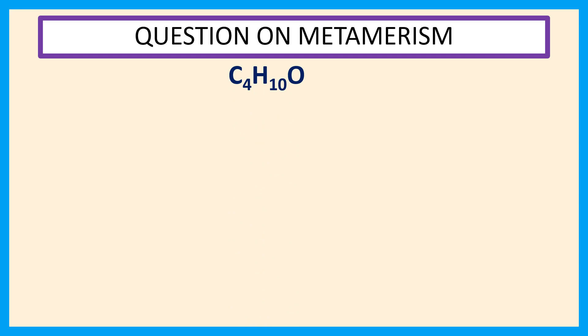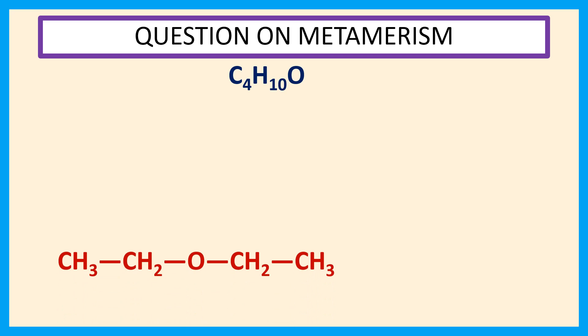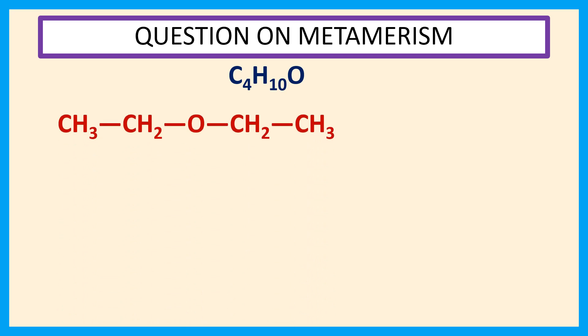So the first metamer is CH3-CH2-O-CH2-CH3, that is ethoxy ethane.